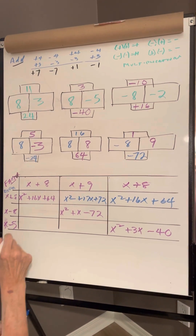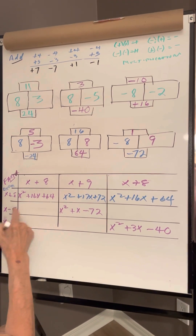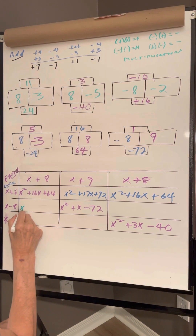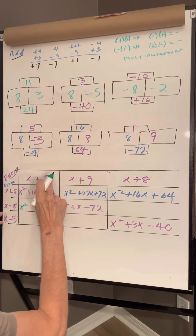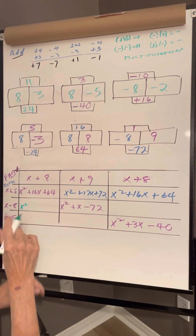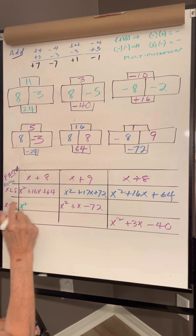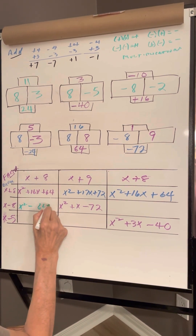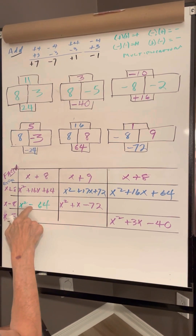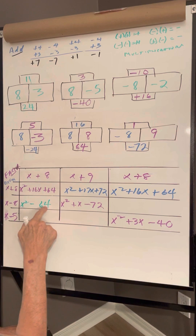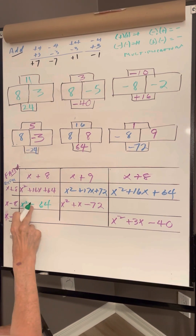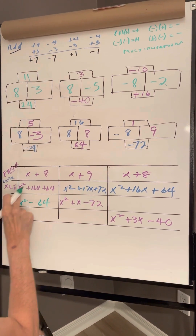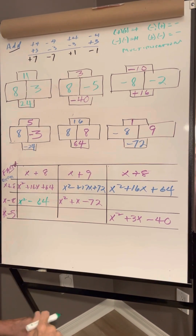Now we're going to go down here. This times this is x times x is x squared. 8x minus 8x is 0. Negative, more negative. 8 times 8 is 64. A difference — x times x, 8 times 8 — difference of two squares, which is x minus 8, x plus 8.